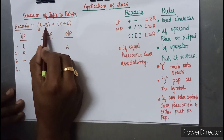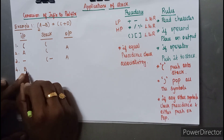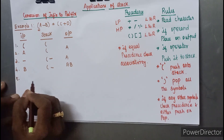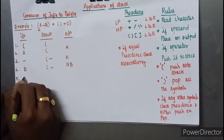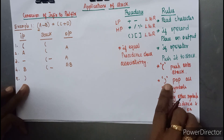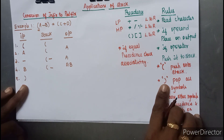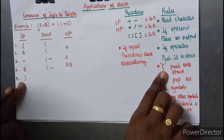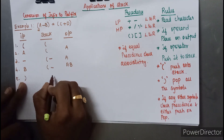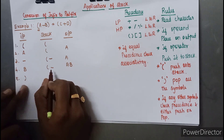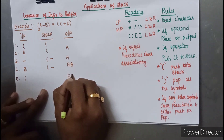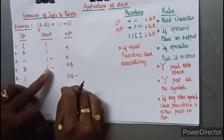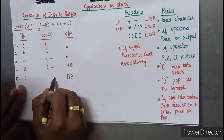The next character read is 'b', which is an operand, so the stack remains the same and 'b' is pushed onto the output string. Next we encounter a close parenthesis. As per our rule, when we encounter a close parenthesis we pop all symbols until we reach the open parenthesis. So we pop the minus symbol and then the left parenthesis, leaving the stack empty. The output becomes 'ab-'.